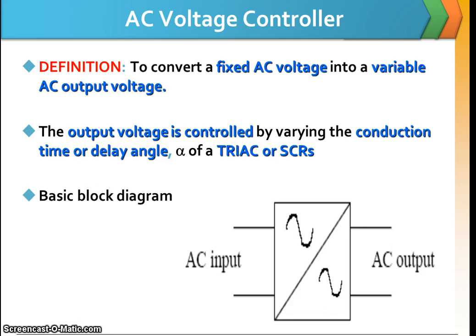In definition, AC voltage control is to convert fixed AC voltage into a variable AC output voltage. The output voltage is controlled by varying the conduction time or delay angle, alpha, of triac or SCR.